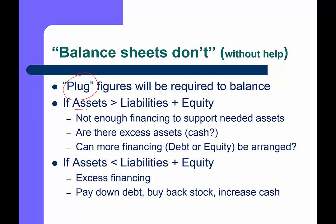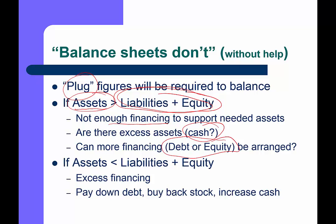If your forecasted assets are greater than combined liabilities plus equity, you don't have enough financing to support the assets. You may need to raise more debt, equity, or a combination. If assets are less than liabilities and equity, you have excess financing — perhaps you reduce debt, buy back some stock, or increase cash for future needs. We'll go through this in much more detail, but that's how we make it balance using the plug figure.